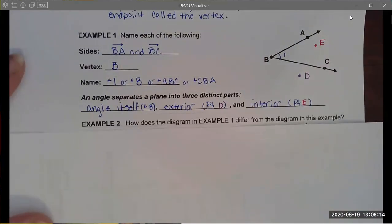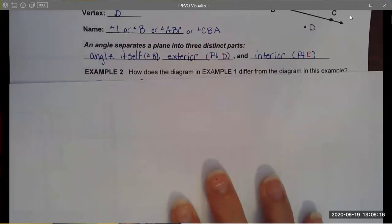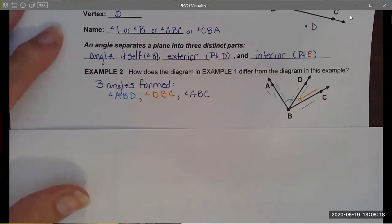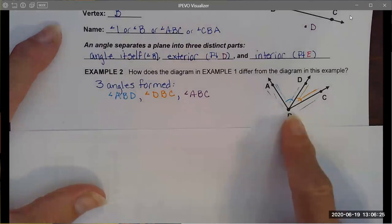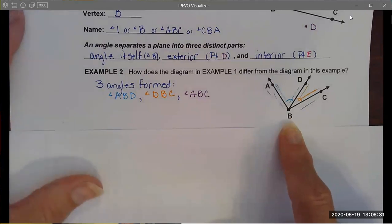We can practice using some of this vocabulary and that's what we're doing in example two. I wanted to explain to you that in this case we could not name this angle just angle B because there are actually three angles available for us to work with in this diagram.